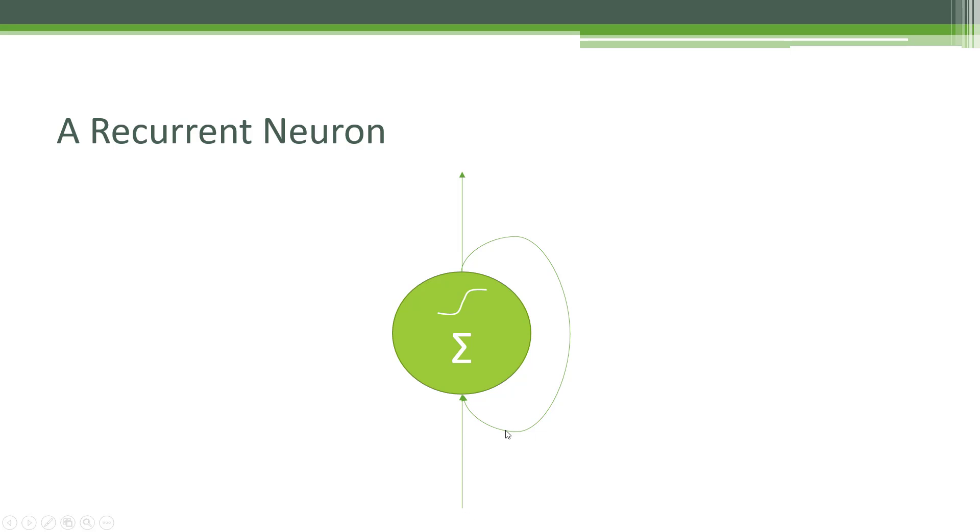So as we keep running this thing over and over again, we'll have some new data coming in that gets blended together with the output from the previous run through this neuron.